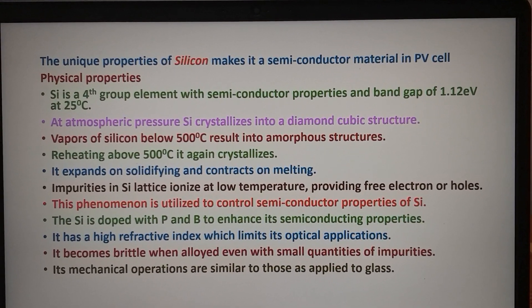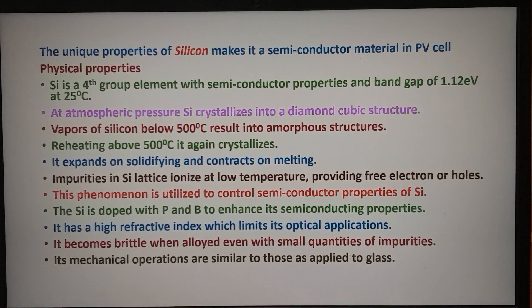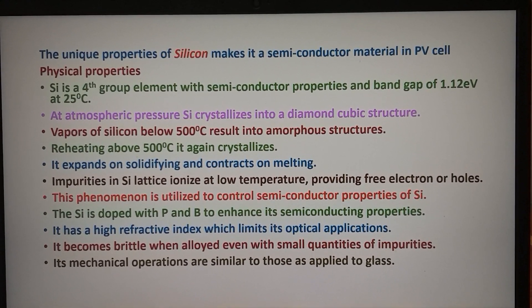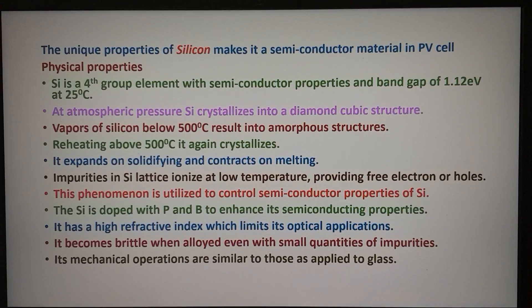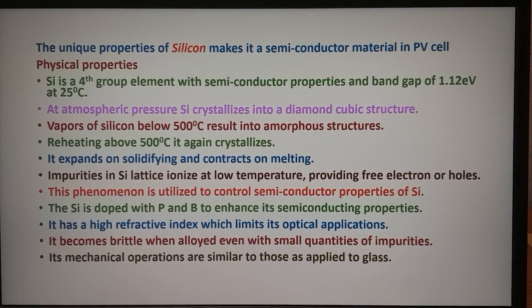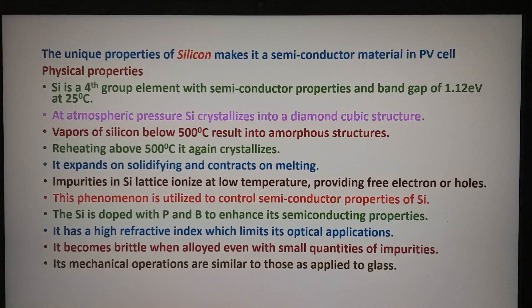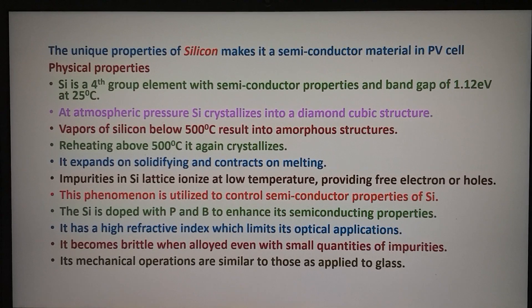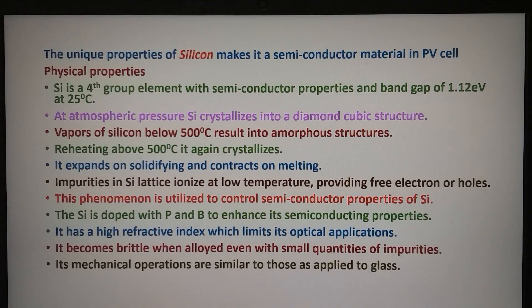The vapors of silicon below 500 degrees result in amorphous structures. But on reheating above 500 degrees, it again crystallizes. On solidifying, it expands and it contracts on melting. The impurities present in the silicon lattice ionize at low temperature, providing free electrons or holes. This phenomenon is utilized to control the semi-conductor properties of silicon. We have already seen in the construction and working of PV cells the formation of holes and electrons.